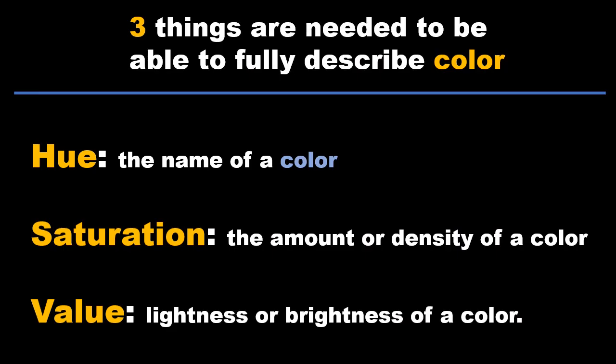There are three basic things you need to be able to describe when talking about a color. First, it's hue. The hue is the name of a color — if I say 'it's a blue sky out there,' I'm talking about the name, which is the hue. Saturation is the amount or density of a color. If I'm putting a lot down, I'm really saturating it. If I'm not putting a lot down, then I haven't put a lot of density of color — there's not a lot there.